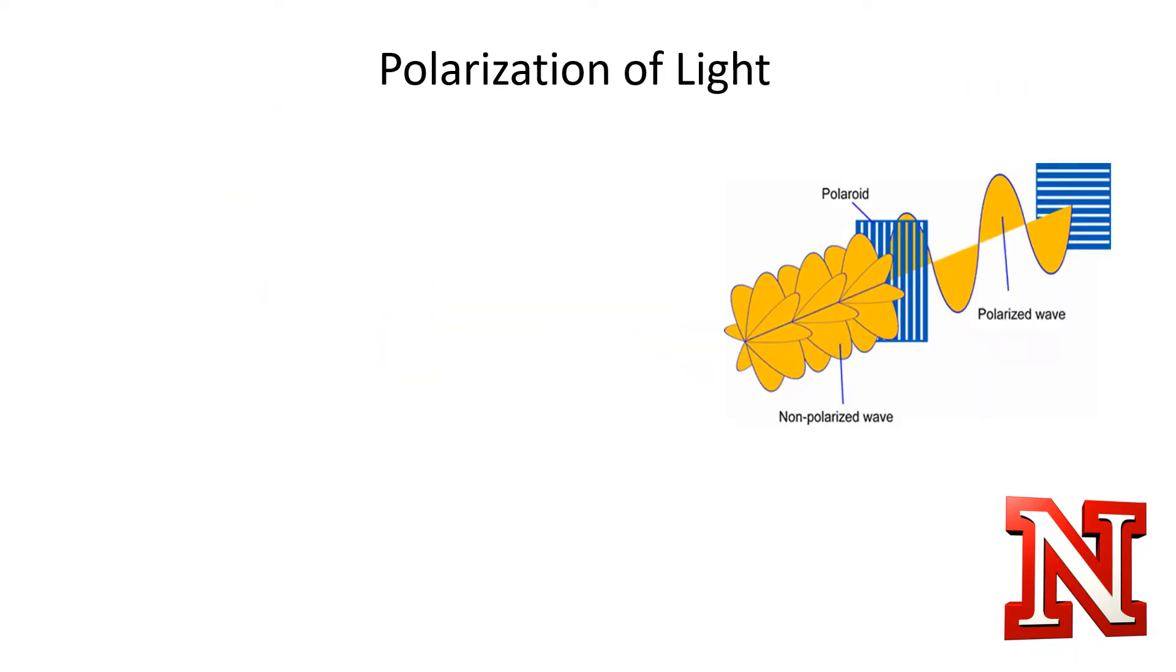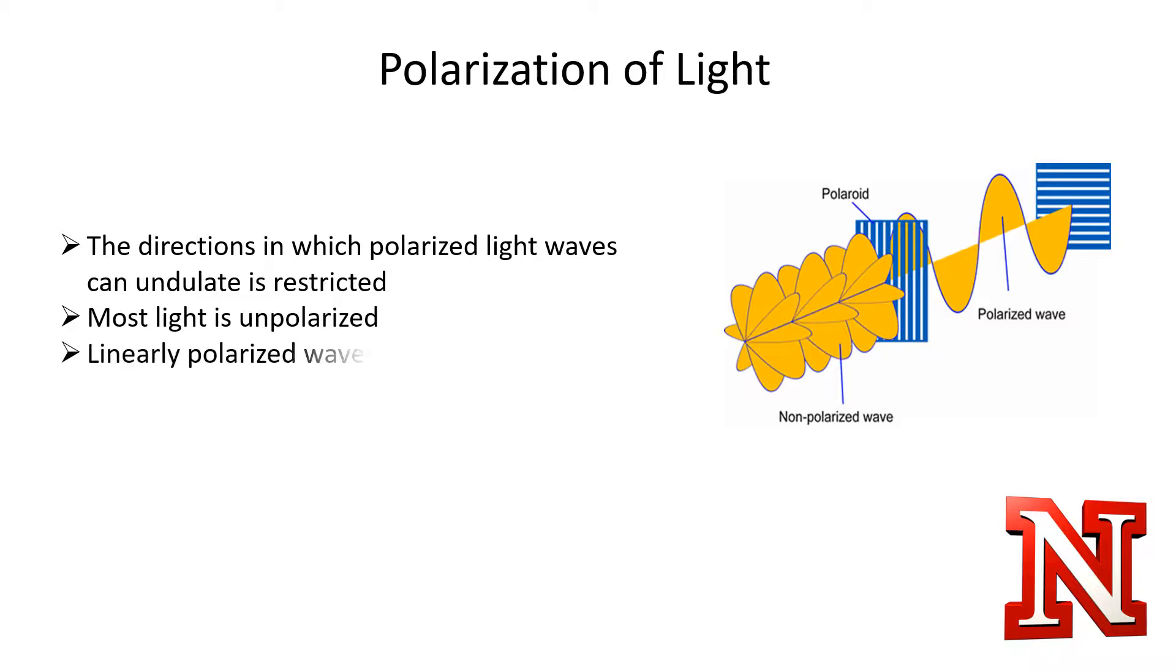Polarized light can only oscillate in specific planes or directions, contrary to unpolarized light which has many electric and magnetic waves oscillating in multiple planes, and most light is unpolarized. Linearly polarized light, for example, oscillates in a single plane like shown in the diagram.